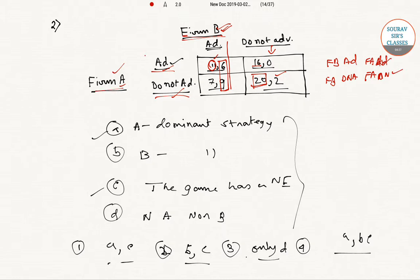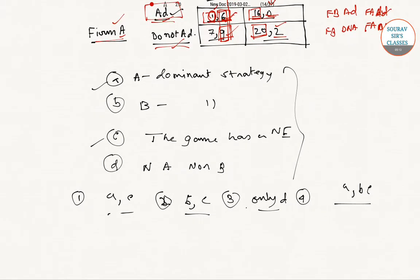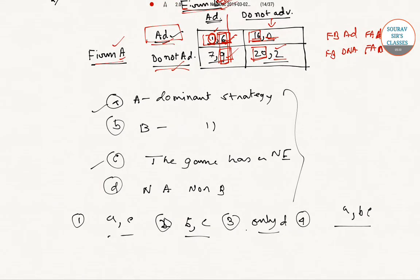Similarly, when Firm A makes the first move and chooses advertisement, Firm B compares payoffs 6 and 0, and chooses 6. When Firm A chooses do not advertise, Firm B compares 9 and 2, and chooses 9. So Firm B always chooses advertisement, with payoffs 6 and 9. Therefore, Firm B's payoff is always higher for advertisement, giving Firm B a dominant strategy to always advertise.